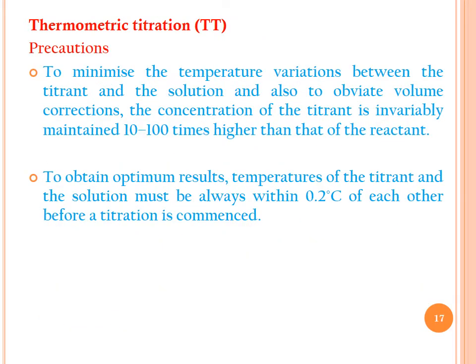During thermometric titration, as a precaution, the concentration of the titrant is invariably maintained 10 to 100 times higher than that of the reactant to minimize temperature variation and comply with volume correction. To obtain optimum results, the temperature of the titrant and the solution must be within 0.2°C of each other before a titration is commenced.